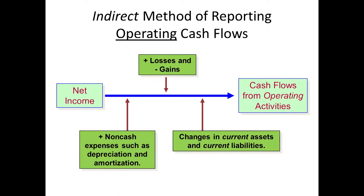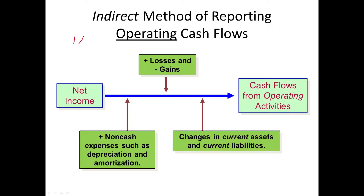Then once we did that, going back to the computer, we started talking about how we're going to do the indirect method. We're going to focus on that today because it is used most often. We're turning a net income number — based on the accrual basis — and we're going to add back our non-cash expenses such as depreciation, amortization, bad debt expense, and depletion. Then we're going to add back our losses and subtract out our gains, to negate their effects.